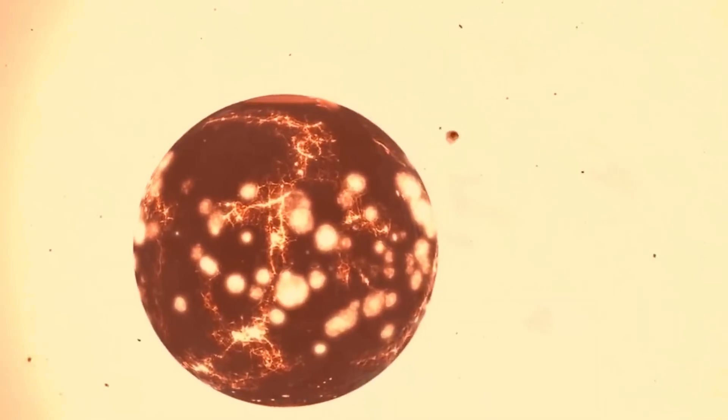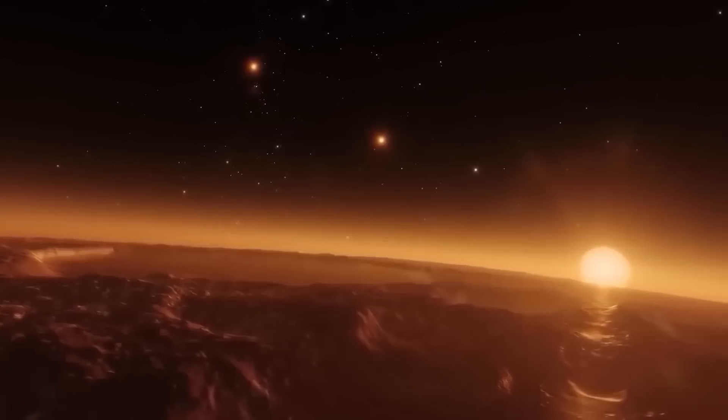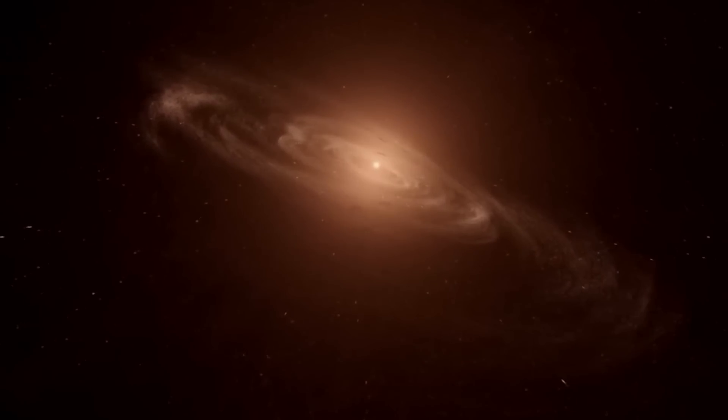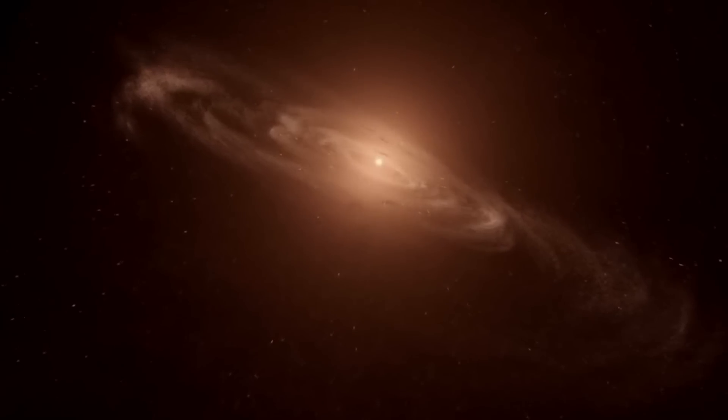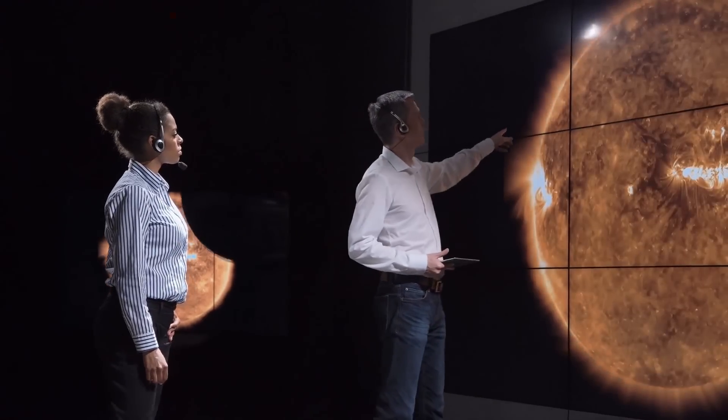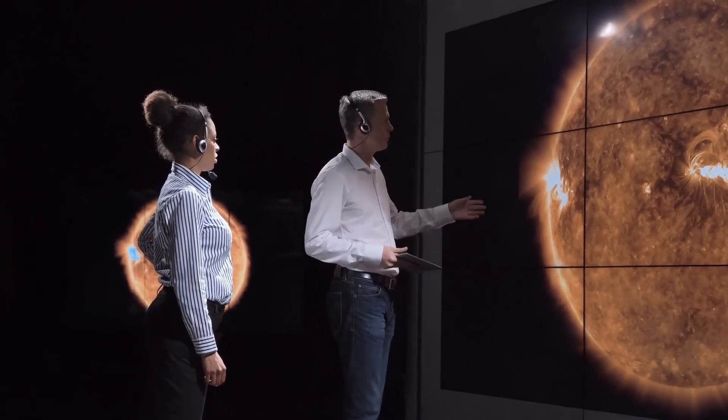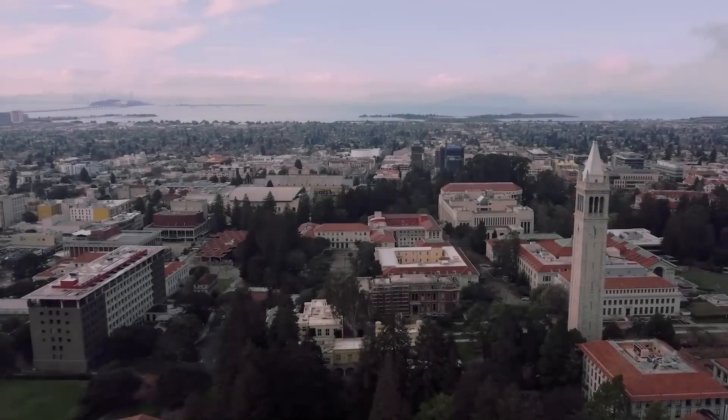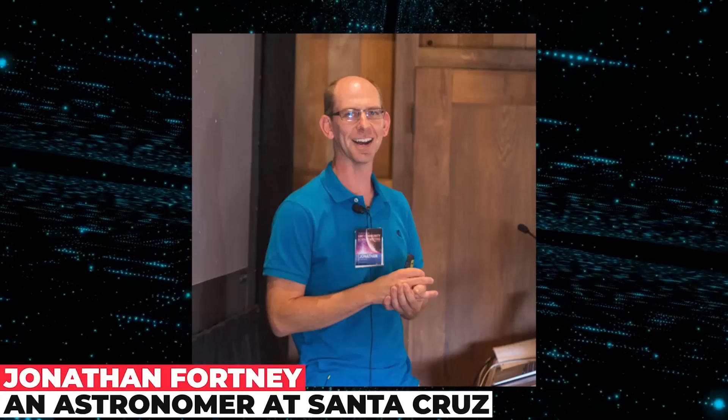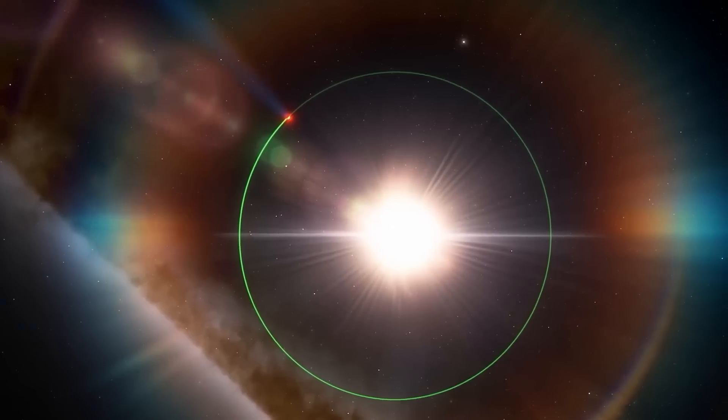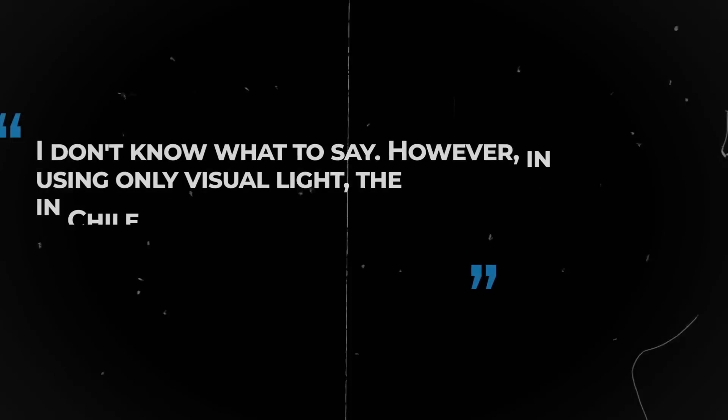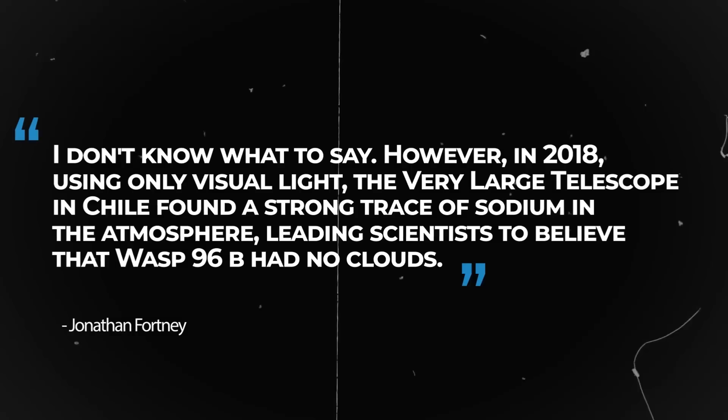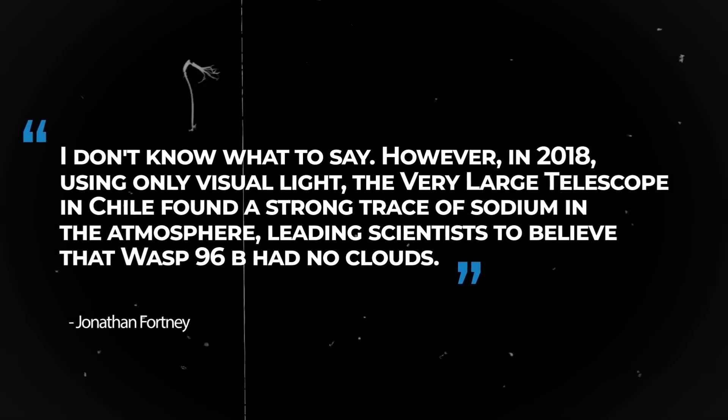Exoplanets with extreme temperatures have cloudy atmospheres. Prior to WASP-96b, cloudy atmospheres were only present in hot gas giants. The discovery of a cloudless atmosphere allows scientists to compare the outlier to its cloud-rich siblings. The research team will be able to comprehend why clouds favor the majority of hot gas giants while ignoring WASP-96b by contrasting their differences. University of California Santa Cruz astronomer Jonathan Fortney thought this was amazing to witness. It was unexpected to see clouds where none were anticipated. However, in 2018, using only visual light, the Very Large Telescope in Chile found a strong trace of sodium in the atmosphere, leading scientists to believe the WASP-96b had no clouds.